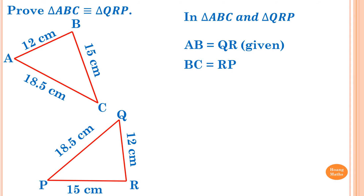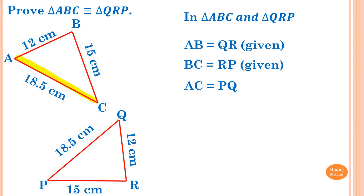BC is equal to RP — both are 15 cm — reason: given. AC is equal to PQ — both are 18.5 cm — reason: given, because it states that in the diagram.